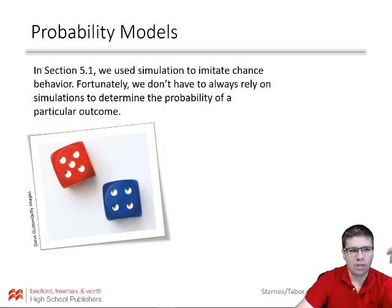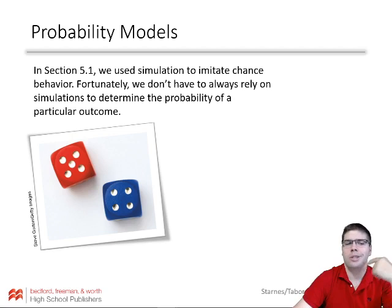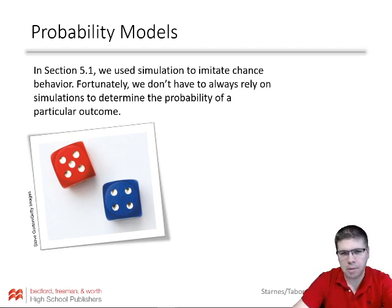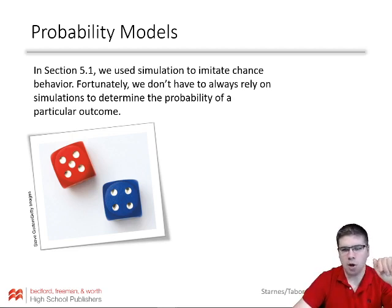In section 5.1 we used simulation to imitate chance behavior, but fortunately we don't have to always rely on simulations to determine the probability of a particular outcome — we can do it theoretically. A probability model is a description of some chance process that consists of two parts: a list of possible outcomes and a probability of each outcome. The list of all possible outcomes is called the sample space.